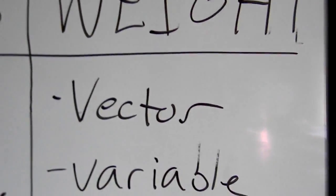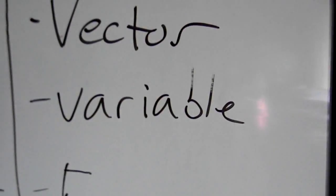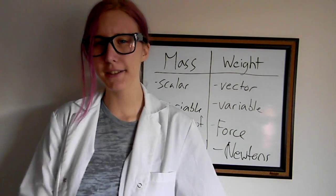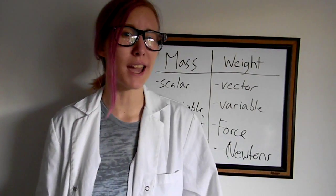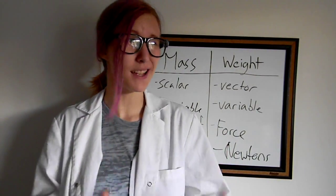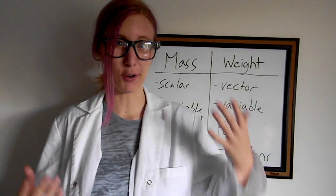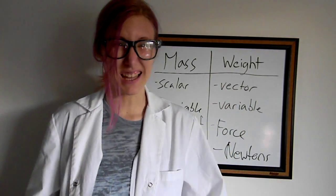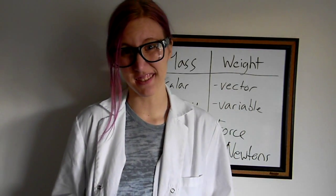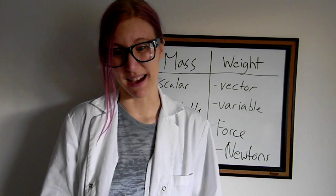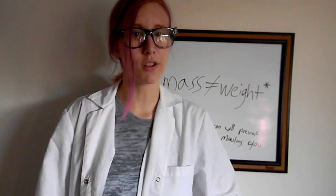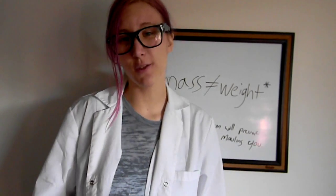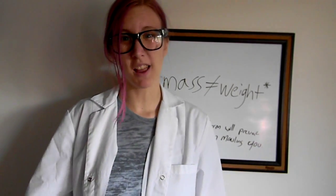To sum up what we hopefully learned today: weight is a vector, it's variable, it's measured in newtons, and it's the force of gravity between two objects. But it's still okay to say something weighs something when you're not actually referring to weight — unless you're surrounded by physicists, then they might get mad. So hopefully now you won't confuse weight and mass, and hopefully you won't get mauled by wild physicists for using the wrong term.